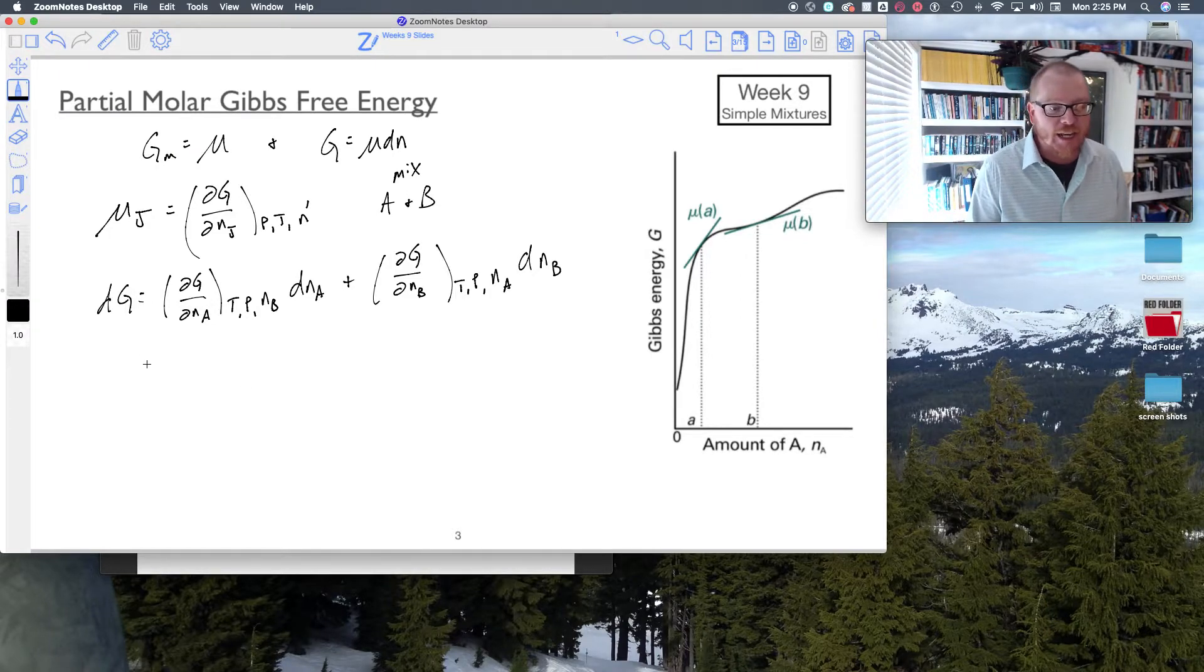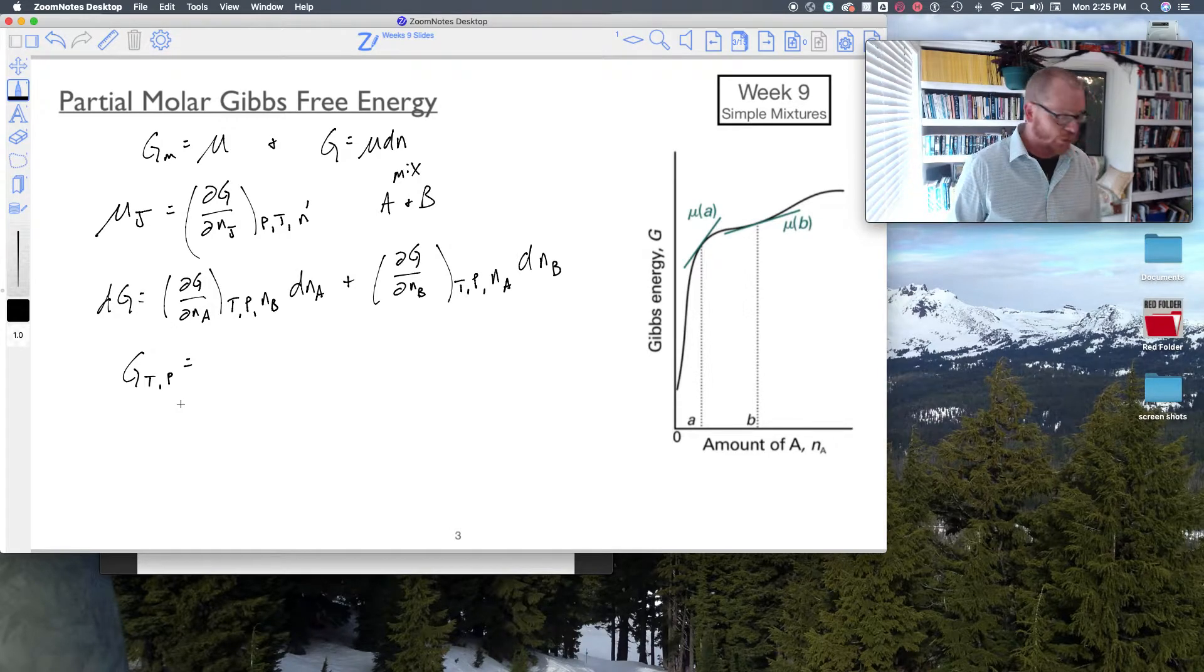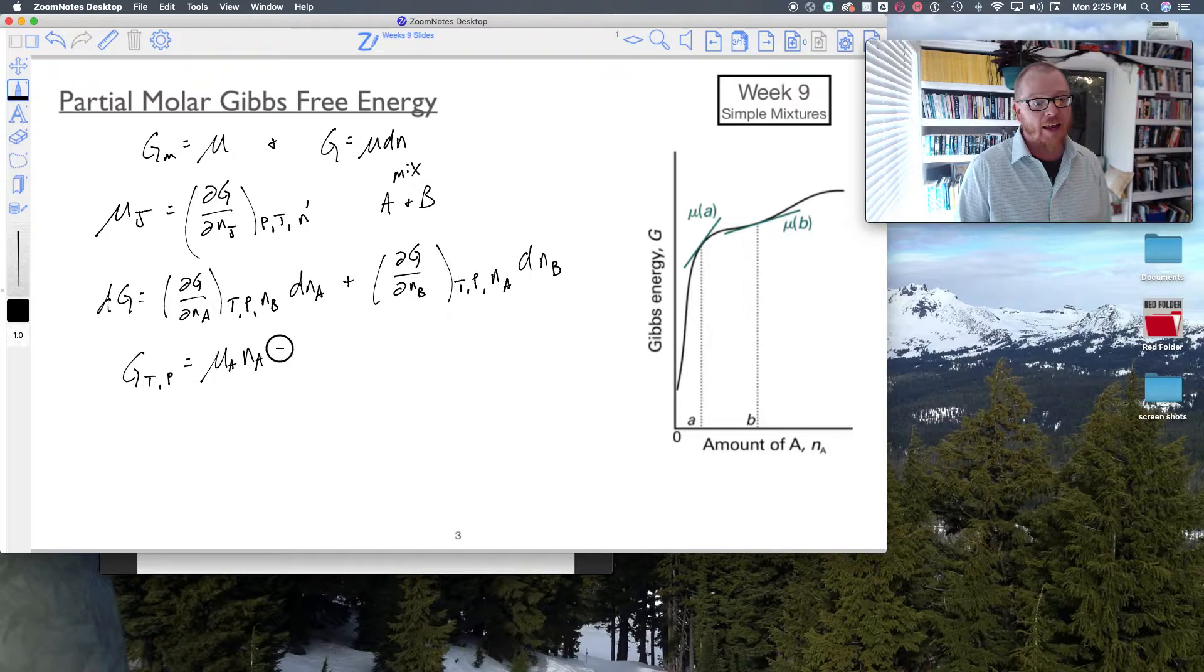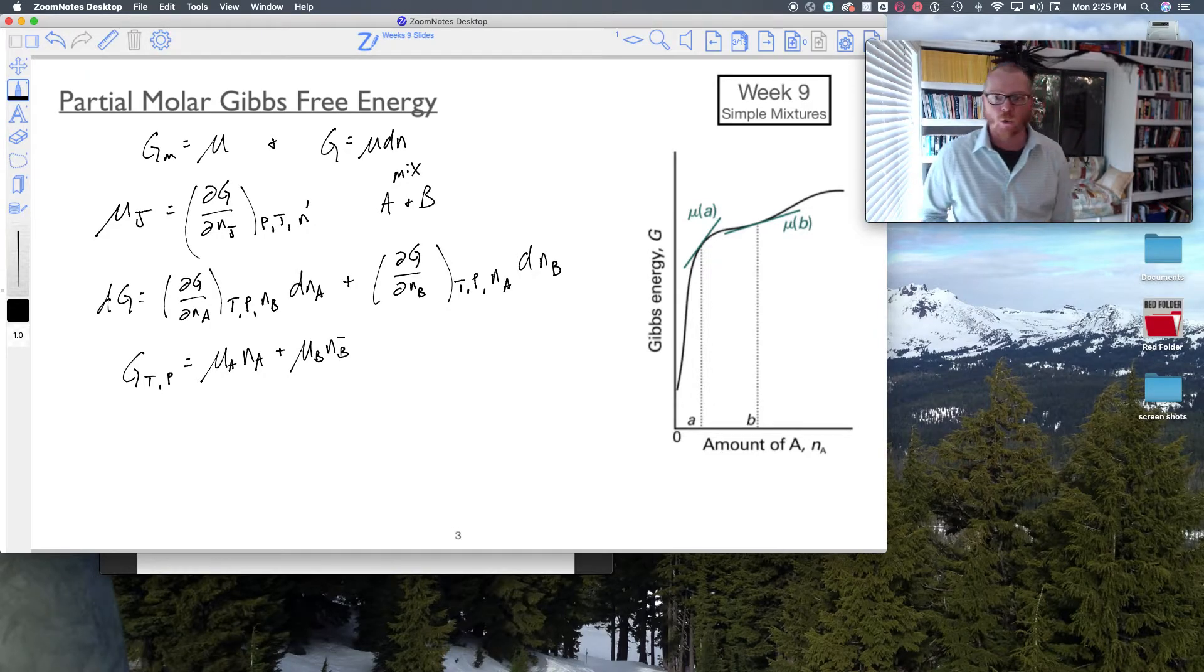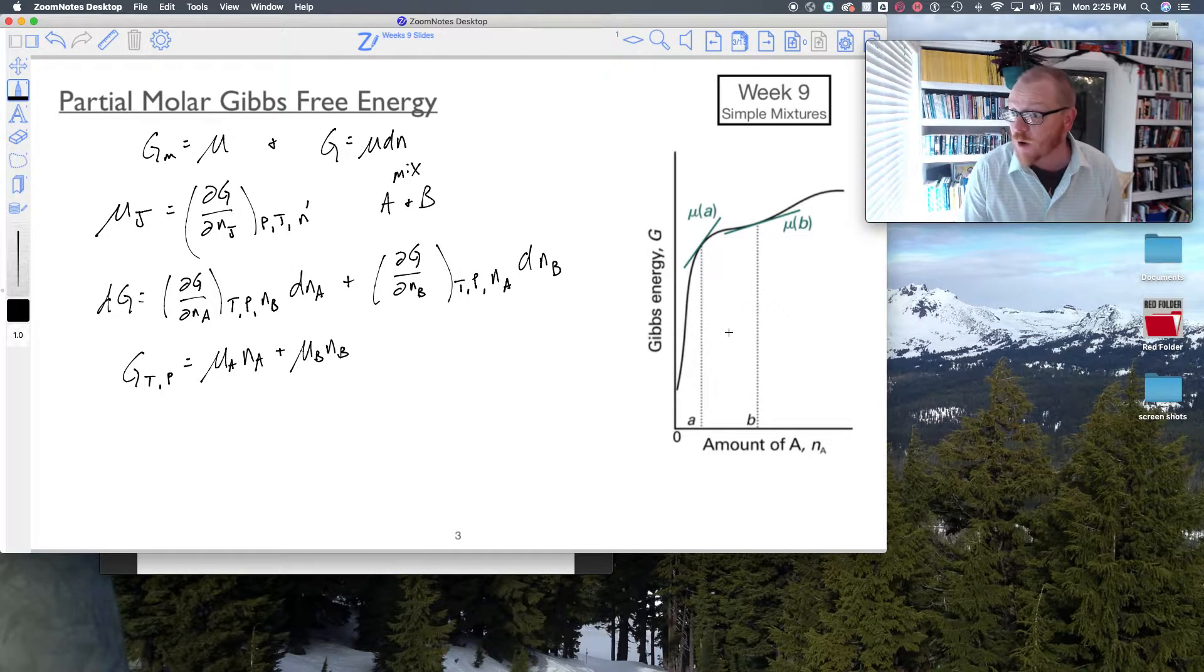Such that now I could write my Gibbs free energy at constant temperature and pressure equals just simply μ_A N_A plus μ_B N_B. So it reduces to that simple equation right there, which is what I see right here.